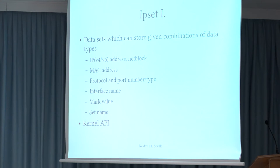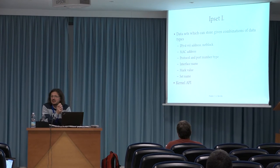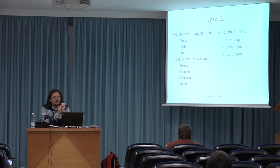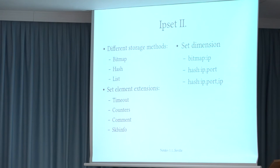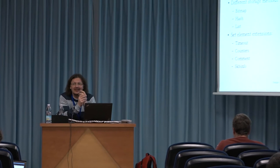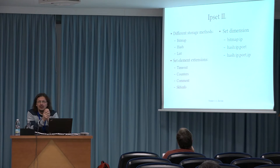The API is of course not restricted to iptables alone. For example, Florian Westphal wrote a TC EM match to match IP addresses in IP sets from TC. IPSet provides a few storage methods to choose from: the original bitmap, the hash type, and lists. Every set type supports different kinds of extensions which can be added to every set element, like timeout values, packet and byte counters, comments, or SKB info related metadata. The sets have got dimensions, which means how many sub-elements form elements in the set: one, two, or three.